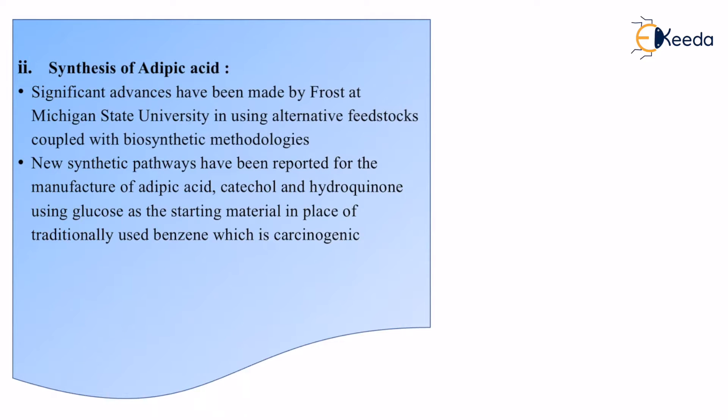New synthetic pathways have been reported for manufacture of adipic acid, catechol, hydroquinone using glucose as the starting material in place of traditionally used benzene which is carcinogenic. We need to understand what are the products and reactants. There are synthetic pathways, different ways of making a particular compound. They are useful in the preparation of adipic acid.